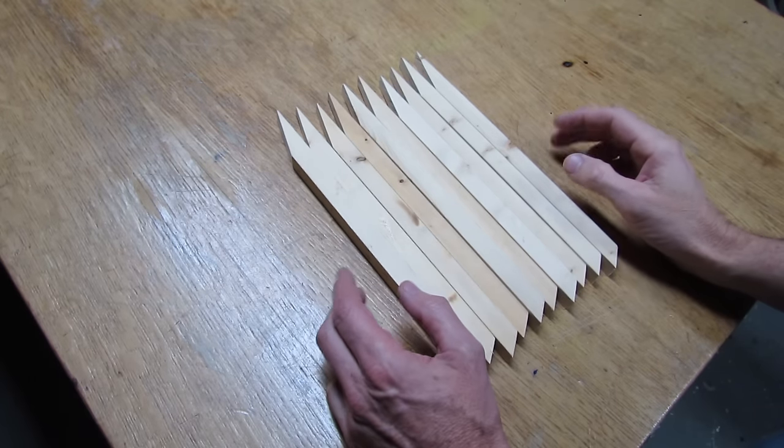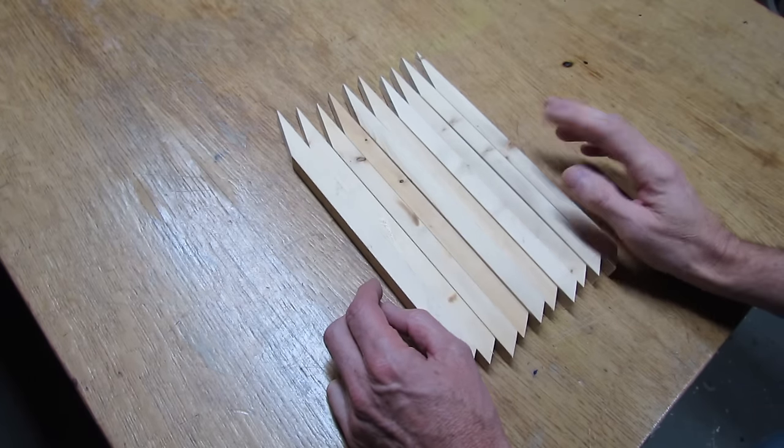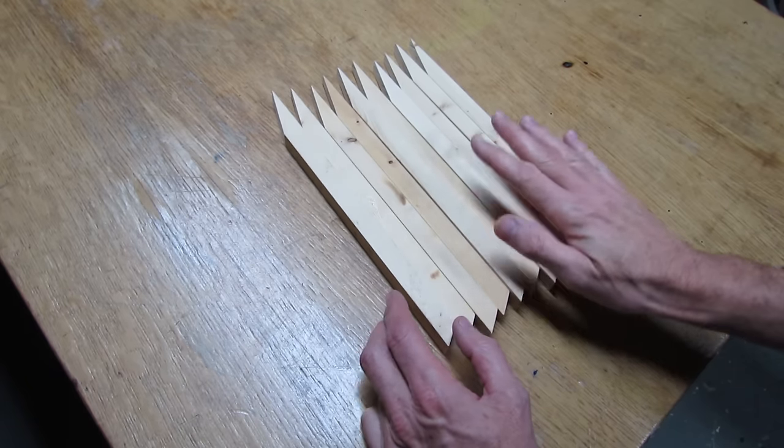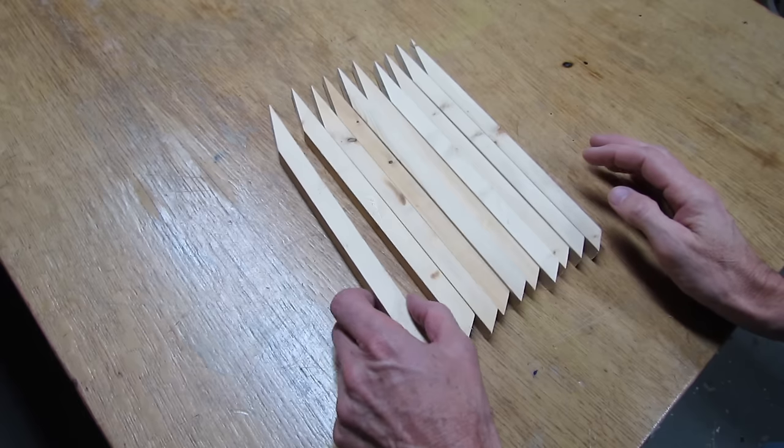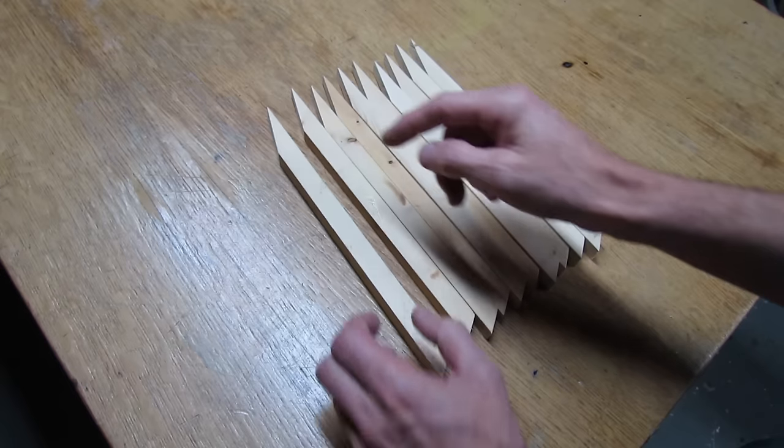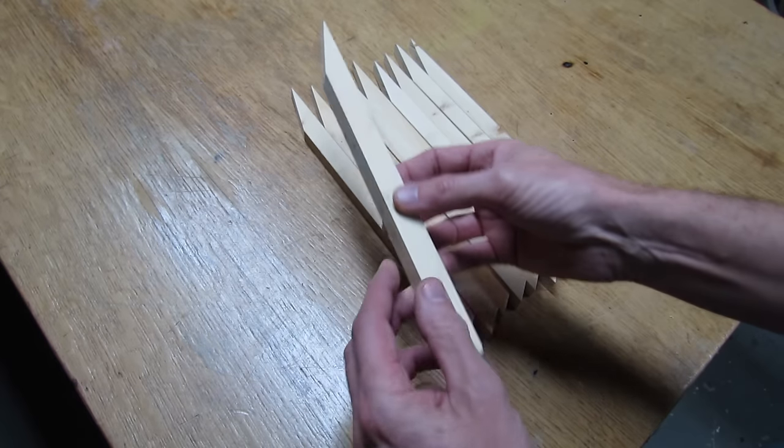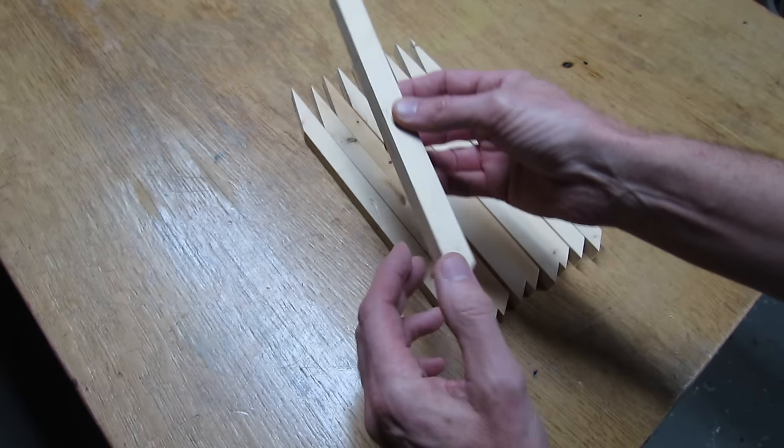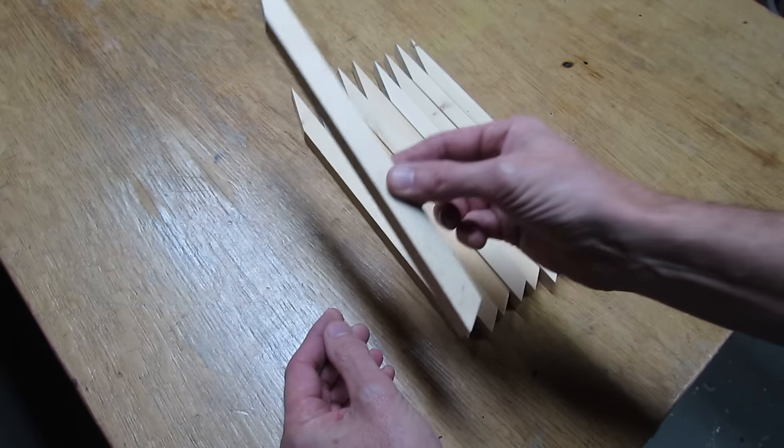So first of all before we build our big star let's talk about how a star is constructed. The one good thing about it is that there's ten pieces that you'll need for making the star and all ten pieces are exactly the same. They're the same length, the same thickness, they'll have angles on both ends, one is more severe than the other and that's about it. You just need to make ten of the same item.